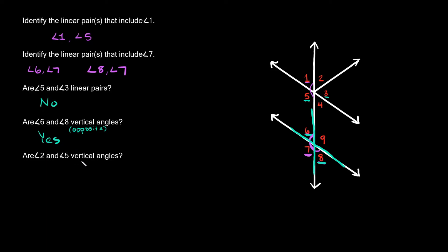Are angle 2 and angle 5 vertical angles? Let's see — angle 5, angle 2. Are these vertical angles, are they opposite angles? No, they're not. Angle 5 is a big obtuse angle, and angle 2 is an acute angle — a smaller angle. They are not the same angle and not congruent. Also, they're not formed by the same two intersecting lines. These two lines intersect to make angle 5, but angle 2 is made by a different straight line that has nothing to do with angle 5. So no, angle 2 and angle 5 are not vertical angles.